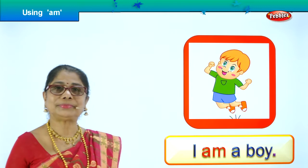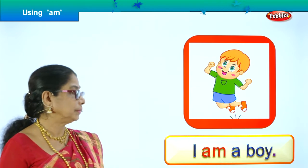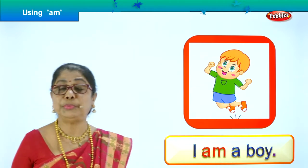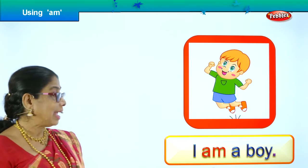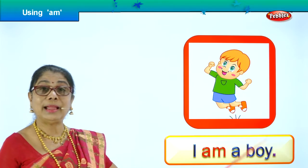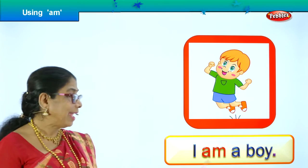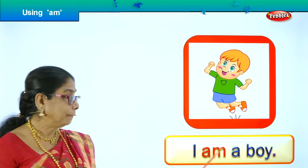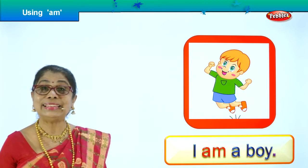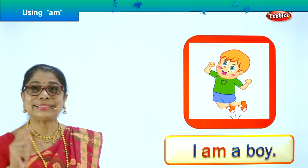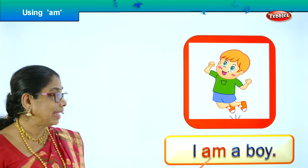Look — you will find 'am' in red, and the full sentence is here with the picture. The little boy seems to be very happy. What does he say? He says: 'I am a boy.' If you ask the boy 'Who are you?', he will say 'I am a boy.' Beginning with capital I, ending with a full stop. We are learning to read the sentence and the use of 'am' in the sentence. Look at the boy jumping and he is telling: 'I am a boy.'